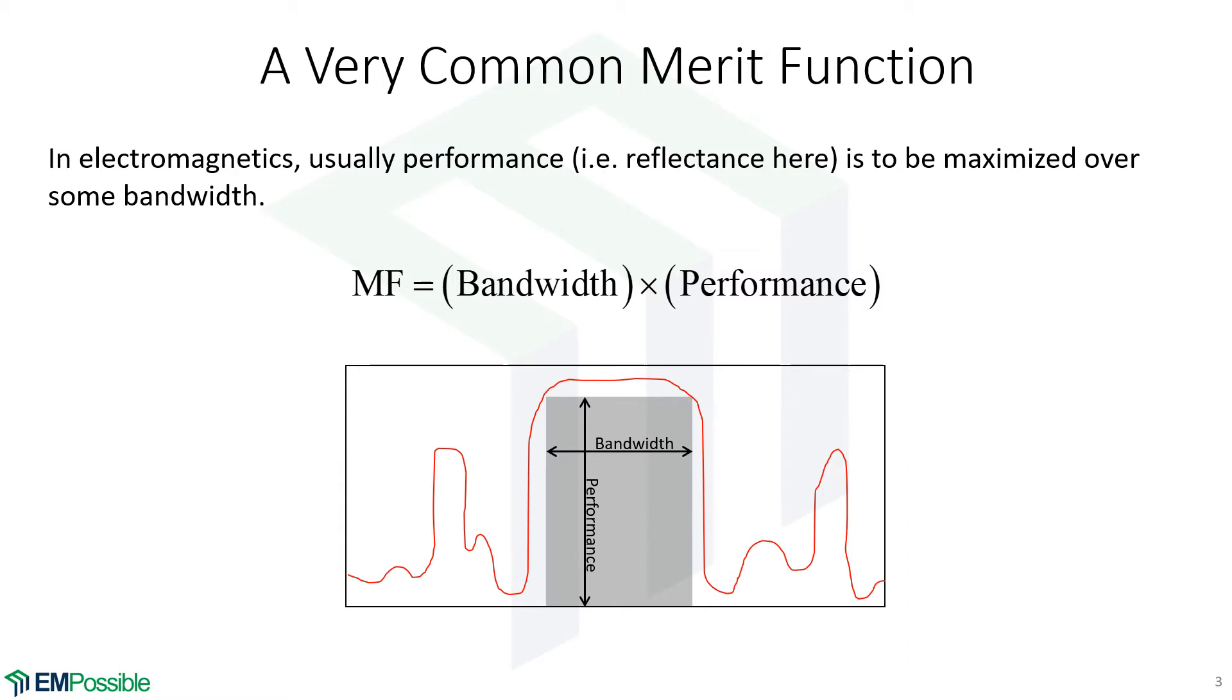A common merit function is bandwidth times performance. We need something to quantify performance. In this case, reflectance makes sense, but we would also like to know over how much bandwidth that works because we would like to maximize bandwidth as well. So a great merit function to use here is some kind of bandwidth times performance.